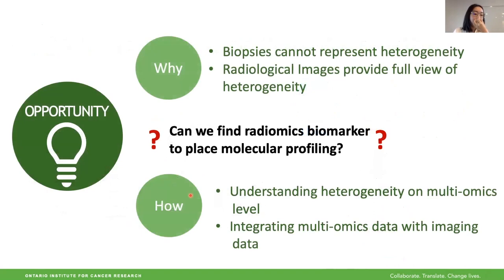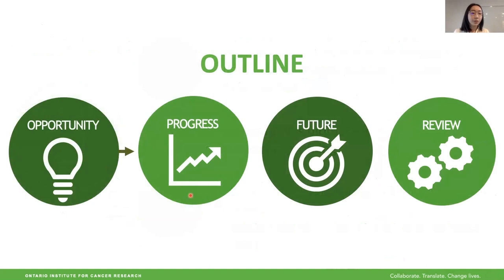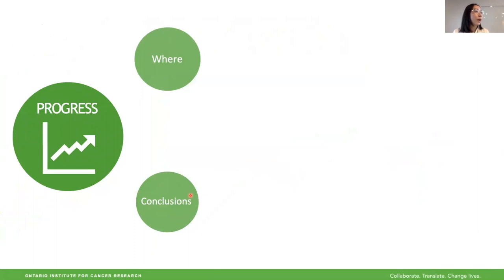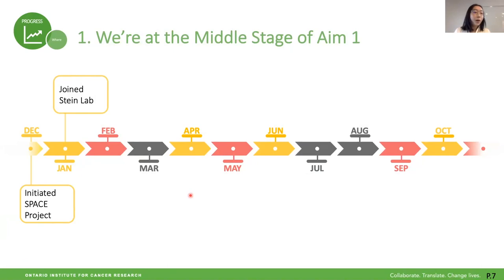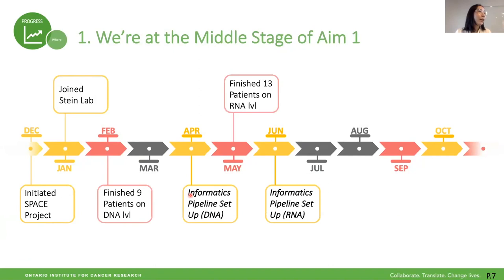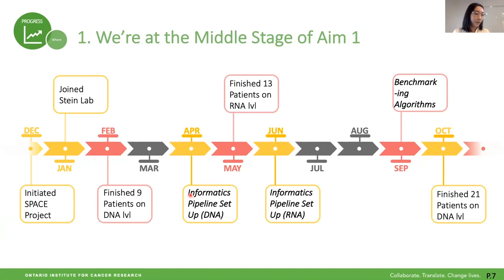That's basically a snapshot of our proposal. Moving to the progress section — in this section, I'll let you know where I am right now and share several preliminary conclusions. To summarize the timeline: we have finished 13 patients on RNA level and 21 patients on DNA level. We haven't started protein level yet. We have a little preliminary data on imaging level. So we are at the middle stage of Aim 1 right now.